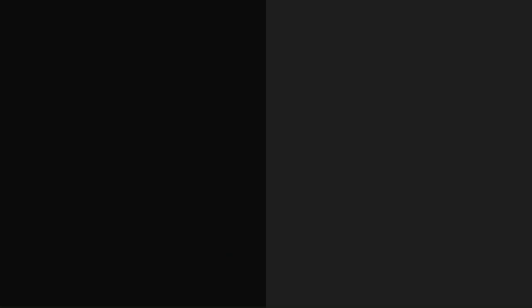In the extreme case where the probability of A was 100%, then the message would carry no information at all, as its exact content would be known in advance, and the entropy of the message, in this case, would be zero.